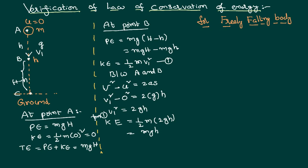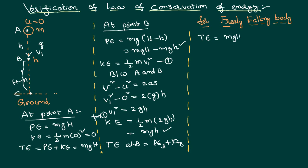Now knowing both the potential and kinetic energy expressions, the total energy at point B is: potential energy MG(H minus h) plus kinetic energy MGh. Adding these: MG(H minus h) plus MGh equals MGH. So the total energy at point B is also equal to MGH.